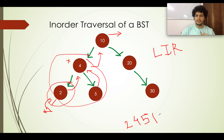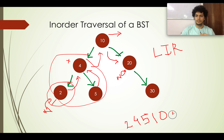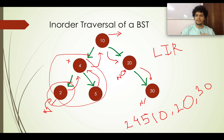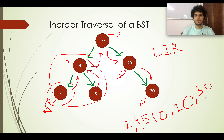Then comes 10. You then iterate through the right part of the tree. Node 20 has no left child, so you print 20. Then you visit its right child, the control goes to 30, whose left is null, so you return and print 30, then visit its null right child and return. Using inorder traversal, all elements are stored in sorted order: 2, 4, 5, 10, 20, and 30.